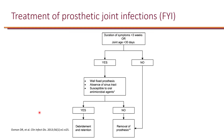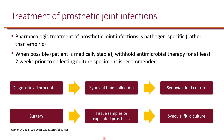The decision whether to remove hardware depends on the duration of symptoms. Typically, if symptoms are greater than three weeks or if the hardware is older than 30 days, it is removed and replaced with a new one. Otherwise, if symptoms have been less than three weeks and/or if the hardware is less than 30 days old, debridement and retention will likely be enough. Antimicrobial therapy for prosthetic joint infection is pathogen-specific rather than empiric.